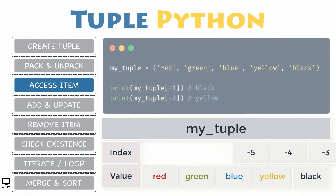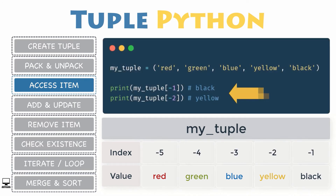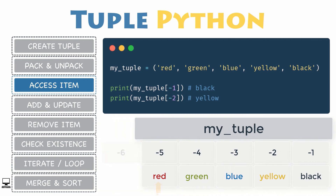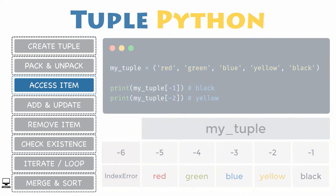You can access a tuple by negative indexing as well. Negative indexing counts backward from the end of the tuple. So my tuple with index -1 refers to the last item, black; my tuple with index -2 refers to the second last item, yellow; and so on. But be careful not to access an element outside of your tuple, or you would get an index error — tuple index out of range exception.